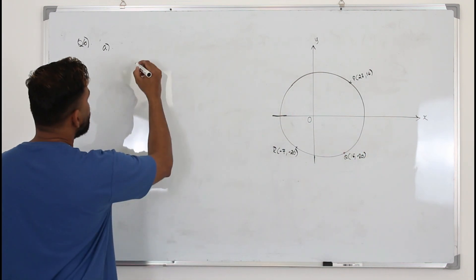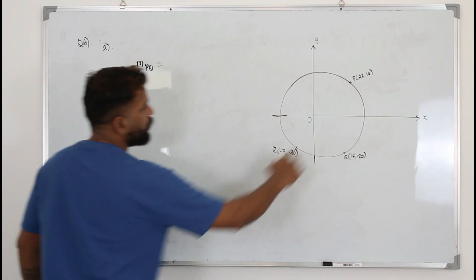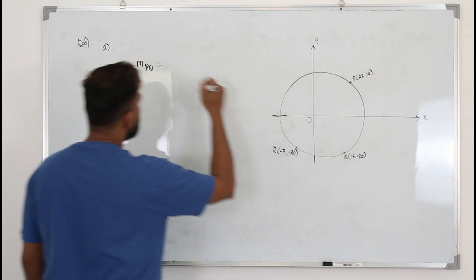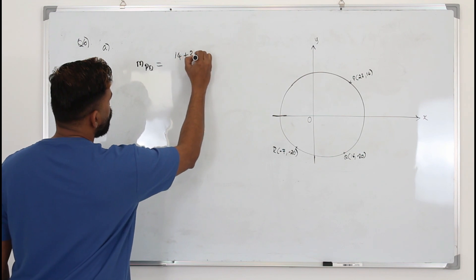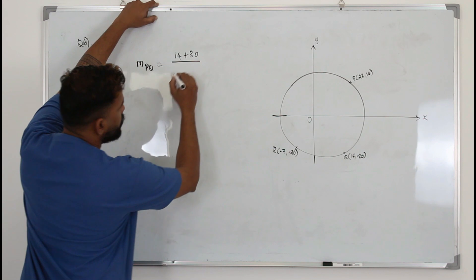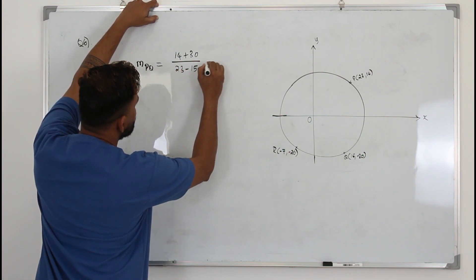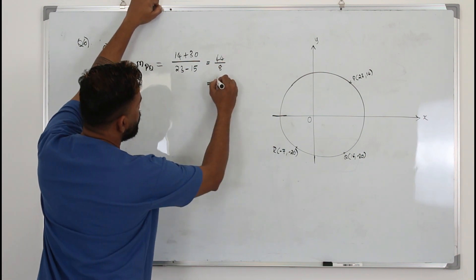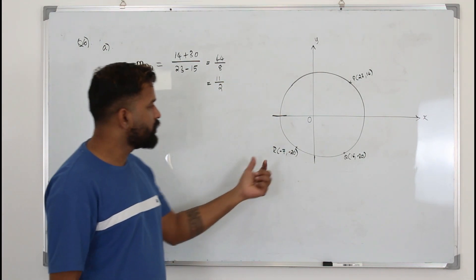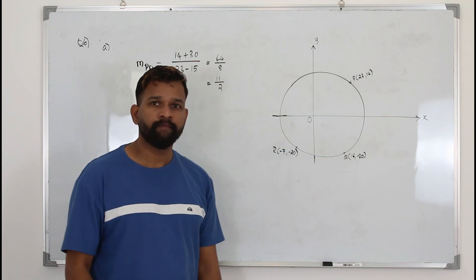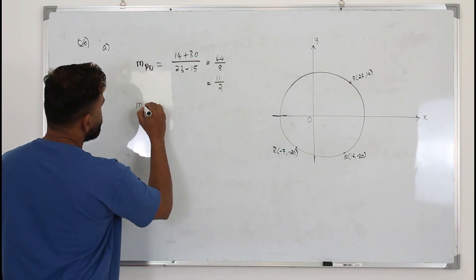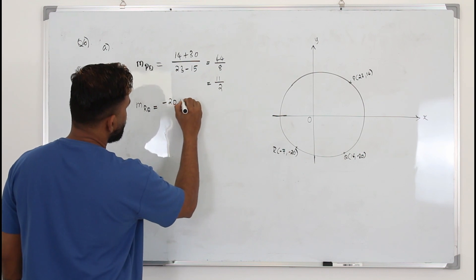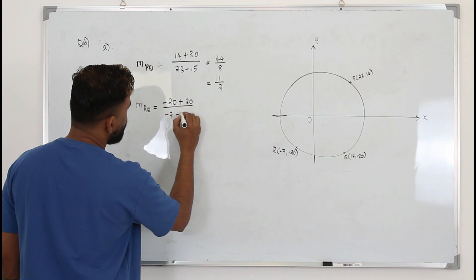First, find the slope of PQ. Label the coordinates X1, Y1, X2, Y2 and apply (Y2 − Y1) / (X2 − X1). Taking the given points, that gives minus 30 divided by... which simplifies to 44 over 8, or 11 over 2. That's the slope of PQ. Now let's find the slope of RQ.